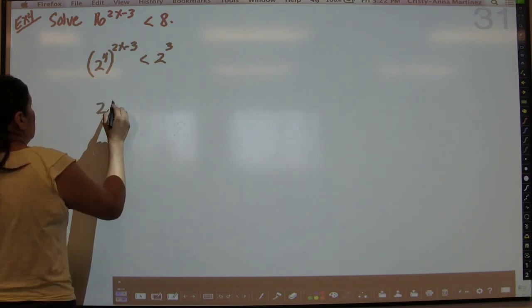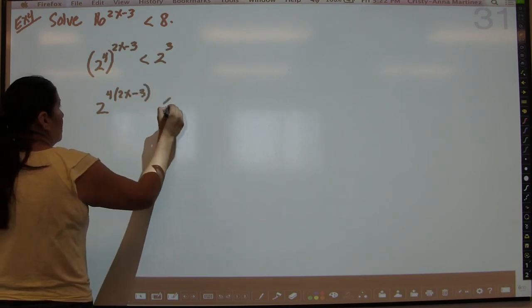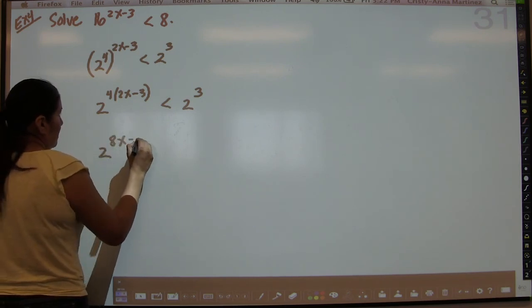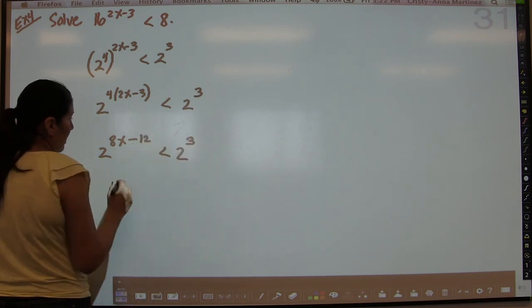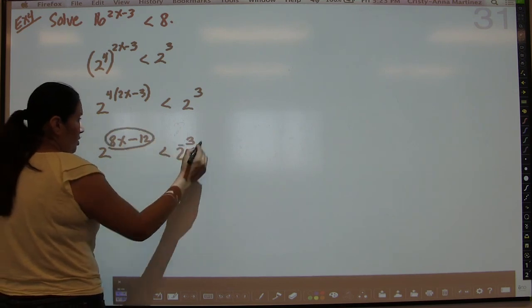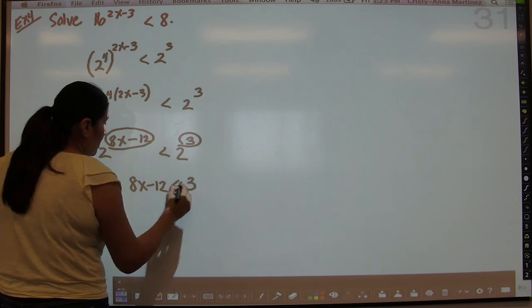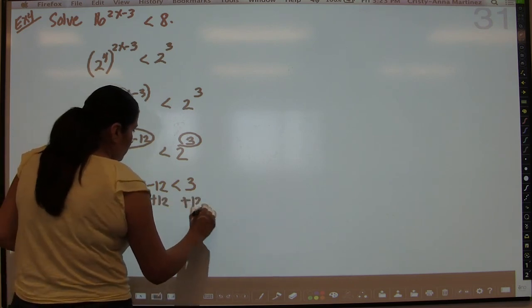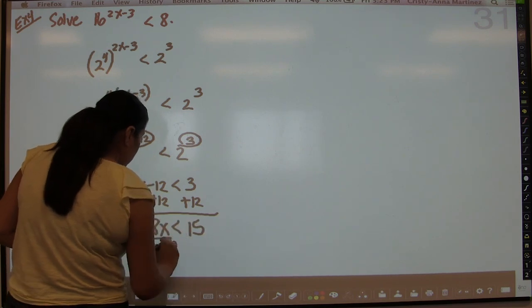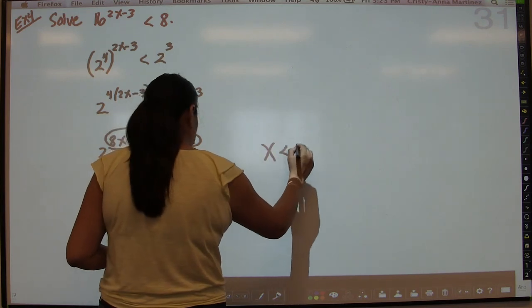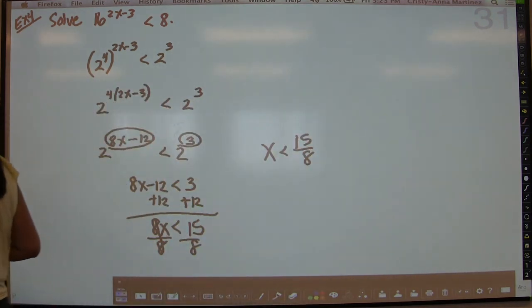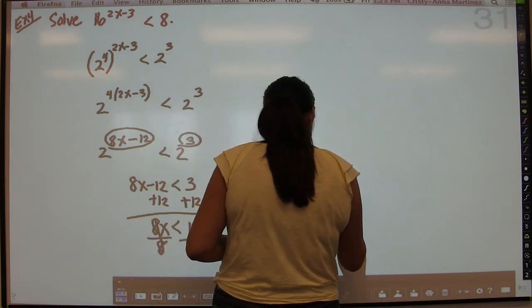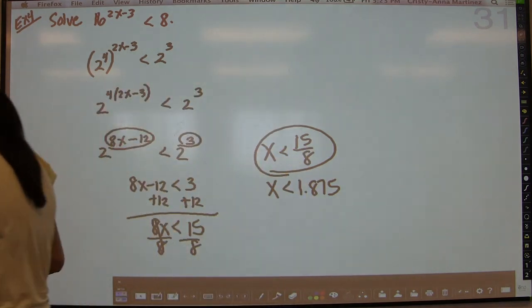So this is going to be 2 to the 4 times 2x minus 3, which then becomes 8x minus 12. And so now since you have the same base, the inequality is preserved for 8x minus 12 should be less than 3. If 8x minus 12 is less than 3, then 2 to the 8x minus 12 would be less than 2 to the 3. So we add 12, and then you get 8x is less than 15, divide by 8, and x is less than 15/8, which is approximately 1.875. But of course we prefer the fraction, but just in case you wanted to make sure, it's 1.875.